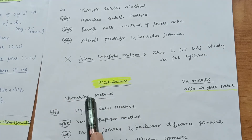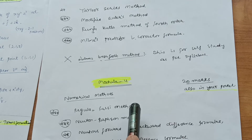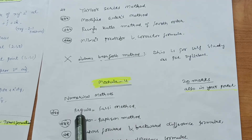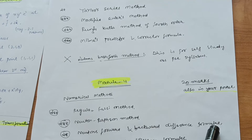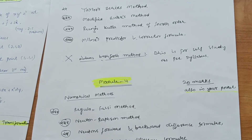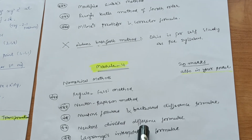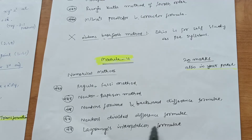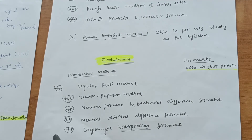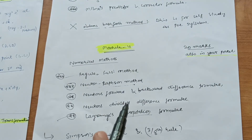In Numerical Methods, focus on the Regula Falsi method — it is the most important part and questions will definitely come from it. Also cover Newton-Raphson method, and Newton's Forward and Backward Difference Formulas. I will provide separate video links in the description for these formulas. Also focus on Newton's Divided Difference Formula and Lagrange's Interpolation Formula — don't confuse them; Lagrange's interpolation is a definite question.